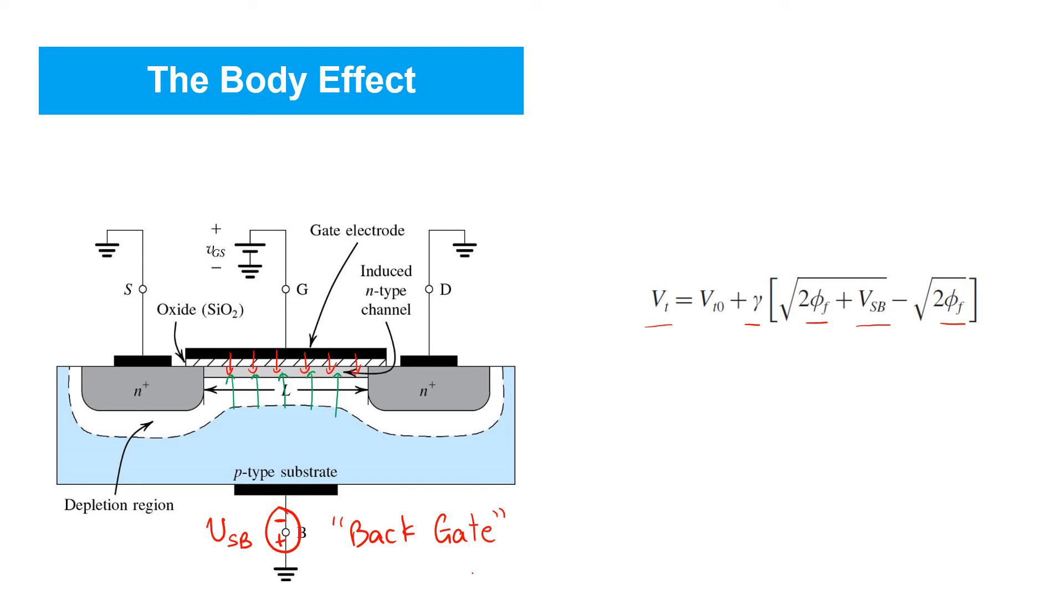first of all, that you see that the intuition that we described is codified in this model. So, as VSB increases, it implies that the body voltage is dropping, the threshold voltage therefore goes up, and the drain current will drop, just as we expect from a field effect, like the one we illustrated in green here.